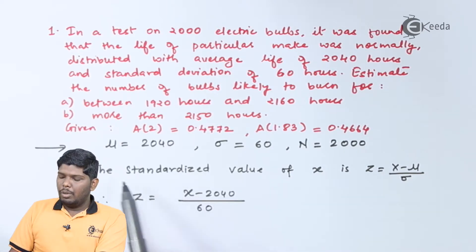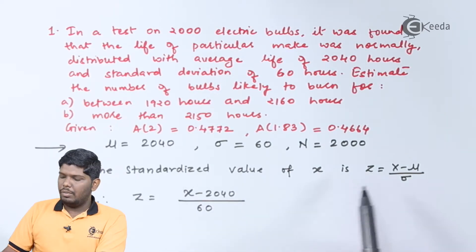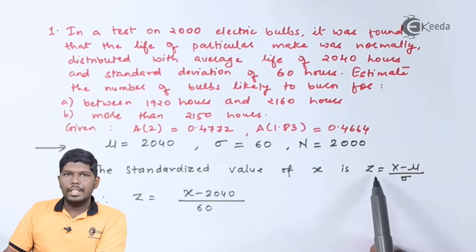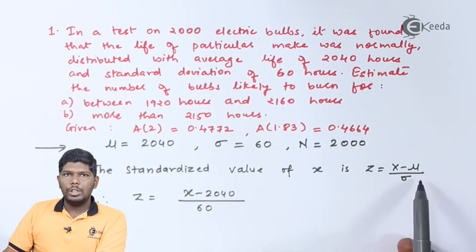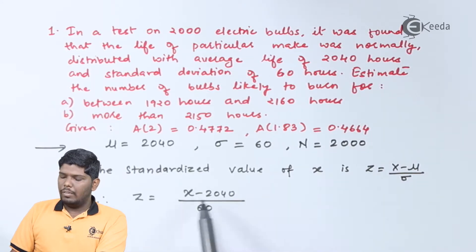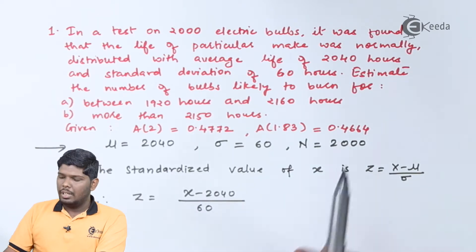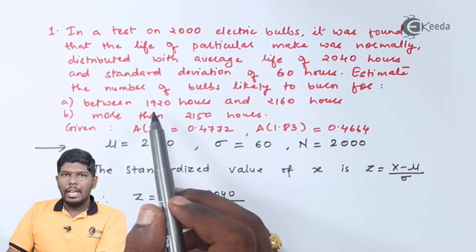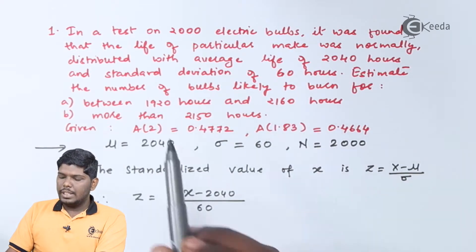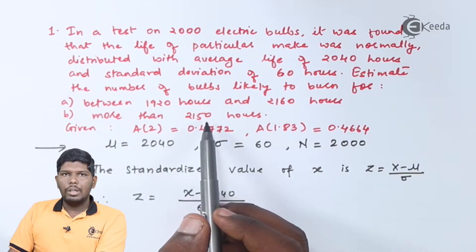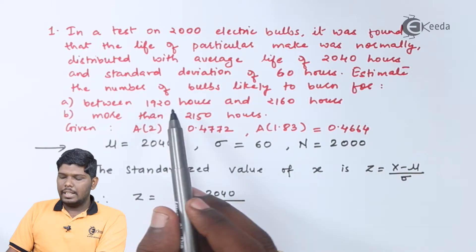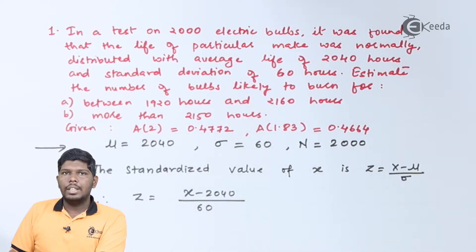In the next step we will find the standardized value of x, which is given by z = (x − mean) / sigma. So its general formula will be z = (x − 2040) / 60. Here x represents the values asked in the question: 1920, 2160, and 2150, and we will find three standardized values of x.